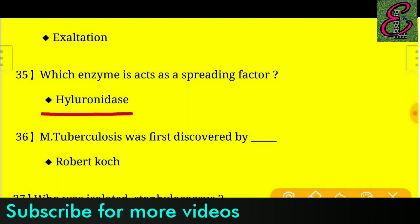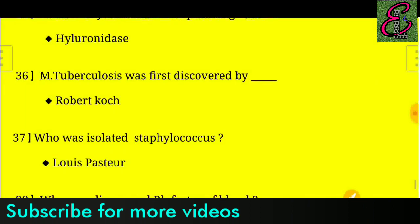Question number thirty-six: Mycobacterium tuberculosis was first discovered by whom? Answer: It was described by Robert Koch.